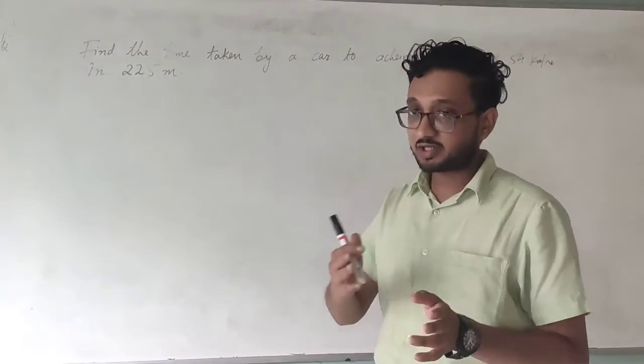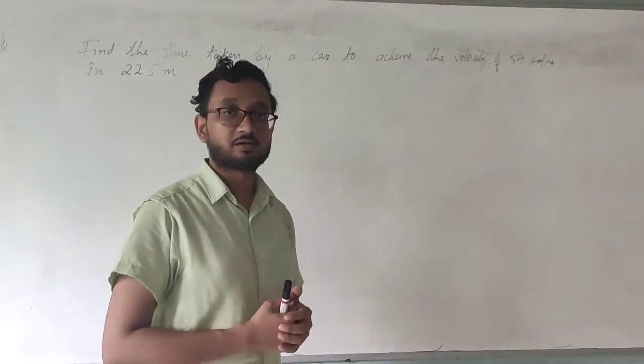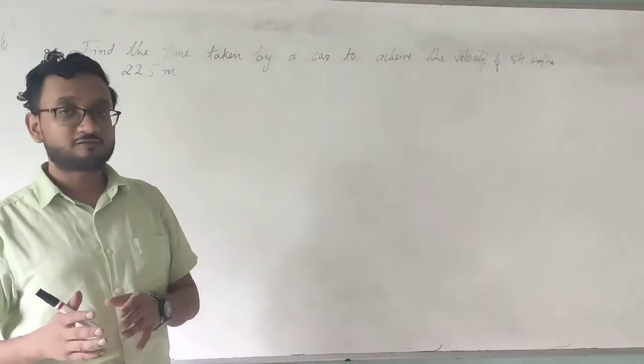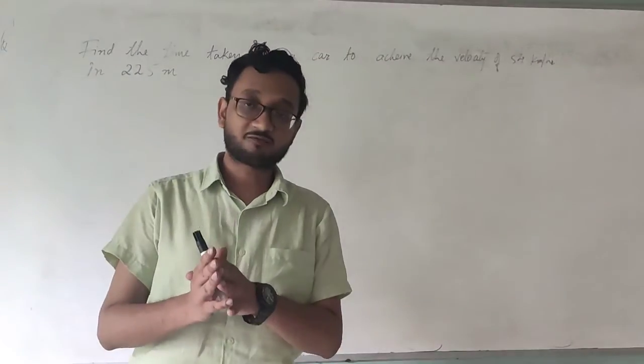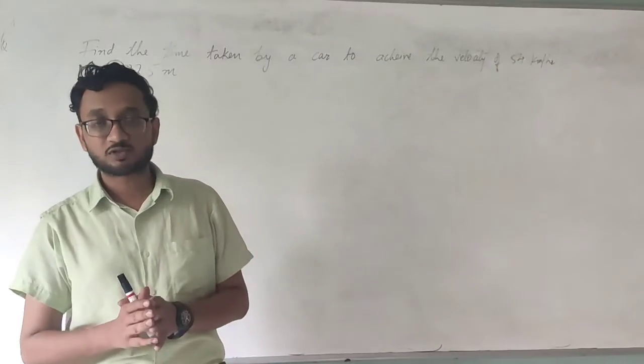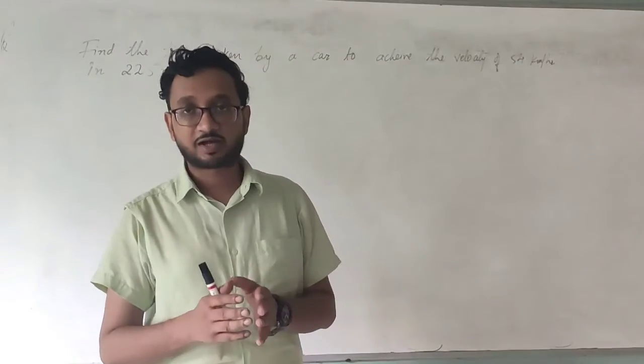It states that find the time taken by a car to achieve the velocity of 54 kilometers per hour in 25 meters. So over here you need to find the time taken. But you are not provided with the acceleration. So once again first thing that you have to do is find the acceleration.